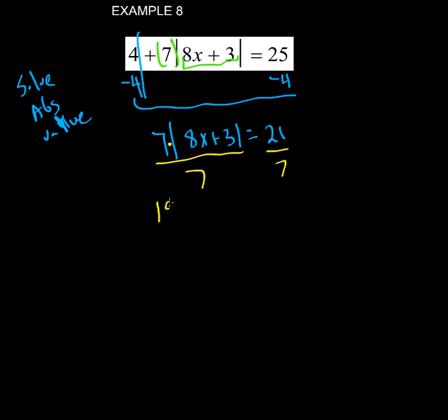We get the absolute value of 8x plus 3 equals 21 divided by 7, which is 3.